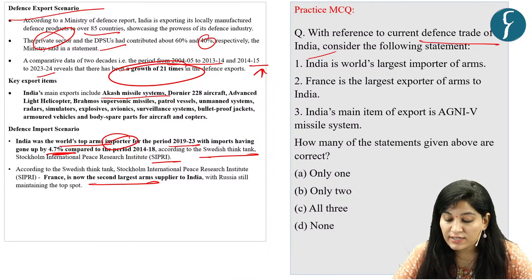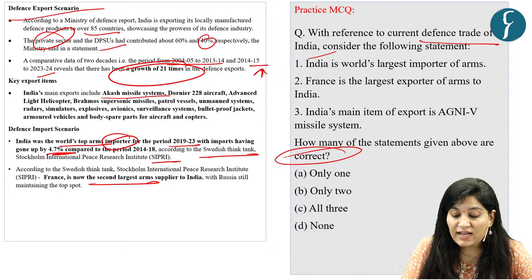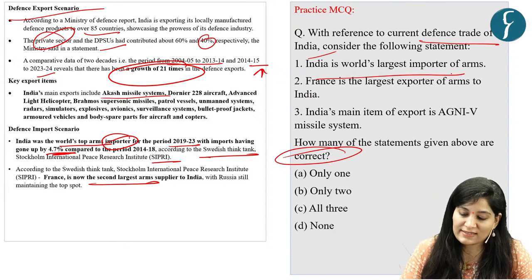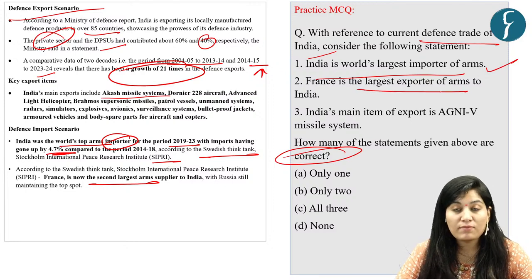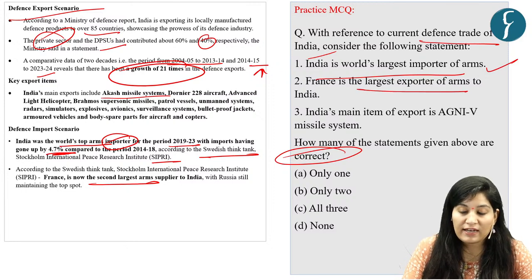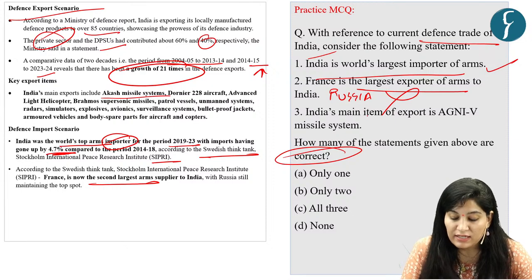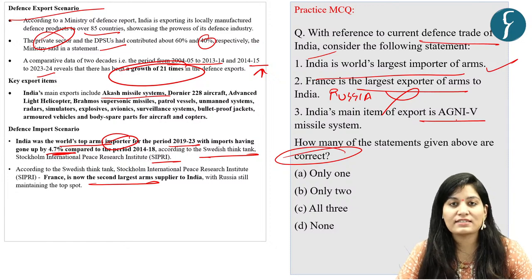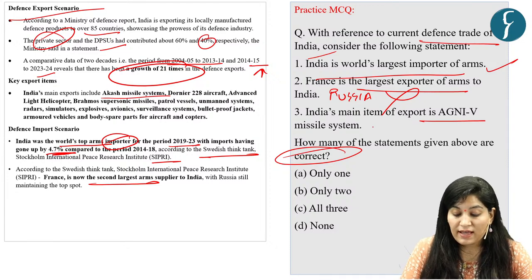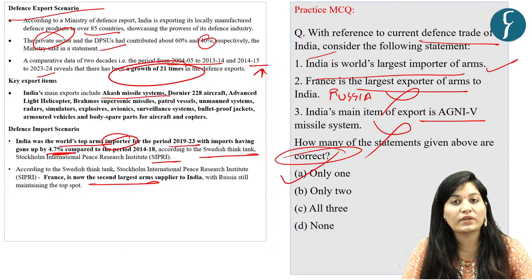Let's solve our practice question. Statement 1: India is the world's largest importer of arms — correct, according to SIPRI. Statement 2: France is the largest exporter of arms to India — incorrect. The largest exporter is Russia; France is second. Statement 3: India's main item of export is the Agni-5 missile system — incorrect. So our answer is option A — only statement 1 is correct.